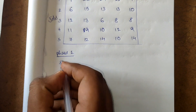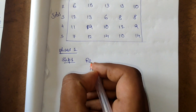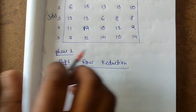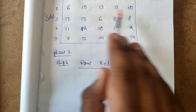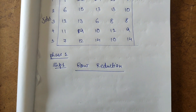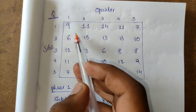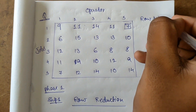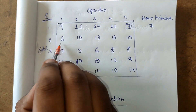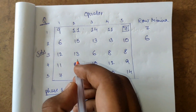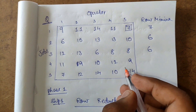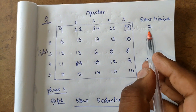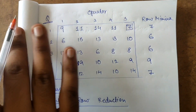Step one of phase one is row reduction. We iterate through each row and find the minimum element in that row. In the first row the minimum is seven, in the second row the minimum is six, in the third row the minimum is six, in the fourth row the minimum is nine, and in the fifth row the minimum is seven.